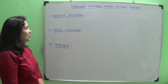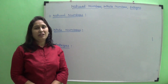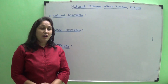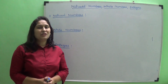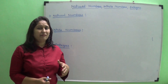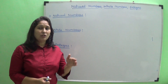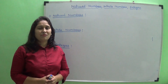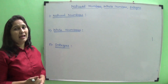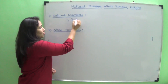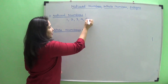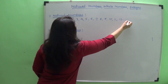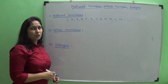Natural numbers means counting numbers. All counting numbers we call natural numbers. When we count, the numbers start from one — we never say zero when counting. We say one, two, three, four, five, six, seven, eight. So we count numbers from one, and all those counting numbers we call natural numbers.